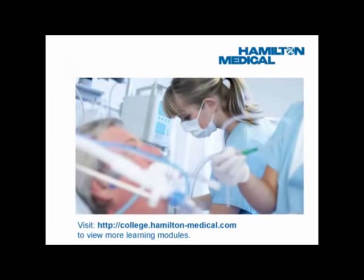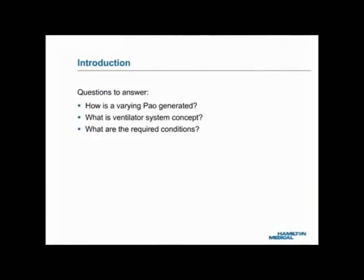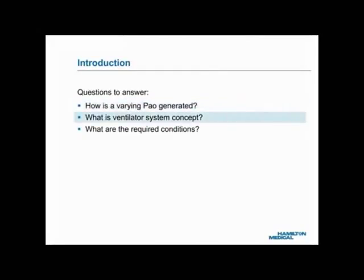It is generally the case that the more the clinicians know, the better the outcome. In the training unit Lung Ventilation, Natural and Artificial, we learned that artificial lung ventilation with positive pressure is achieved by intermittent alternation of airway opening pressure between the pressure baseline and the peak pressure. After studying this training unit, you should be able to explain how varying airway opening pressure, or PAO, is generated, and understand the concept underlying a ventilator system and the conditions required for it to work as it should.